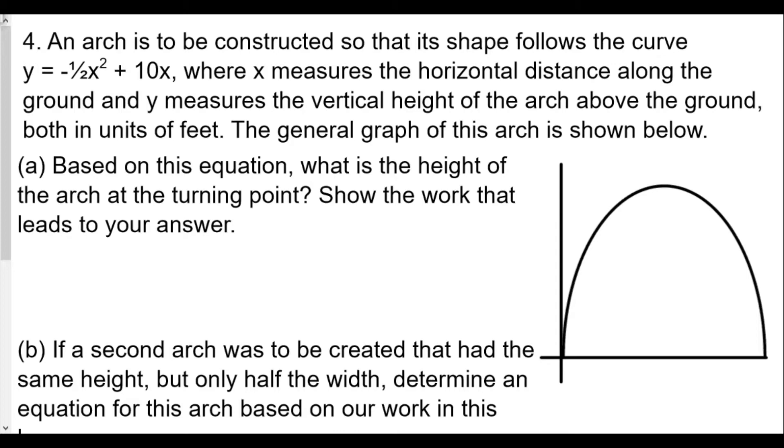Well, what we want to do is probably going to use our axis of symmetry. And so our axis of symmetry formula requires us to find out our a value, which is negative one half, our b value, which in this case is going to be 10.